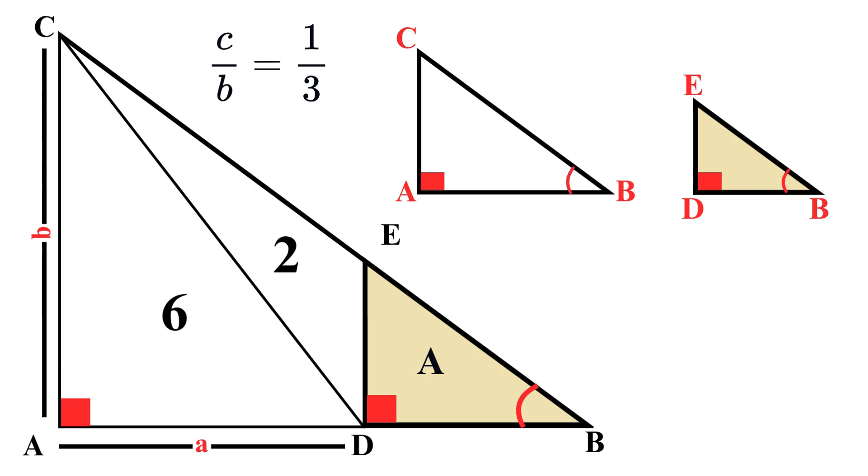Furthermore, we know that the area of our big triangle ABC is equal to the sum of the areas of our three triangles, which equal A plus 6 plus 2, giving us A plus 8. And the area of the small triangle DBE is equal to A.